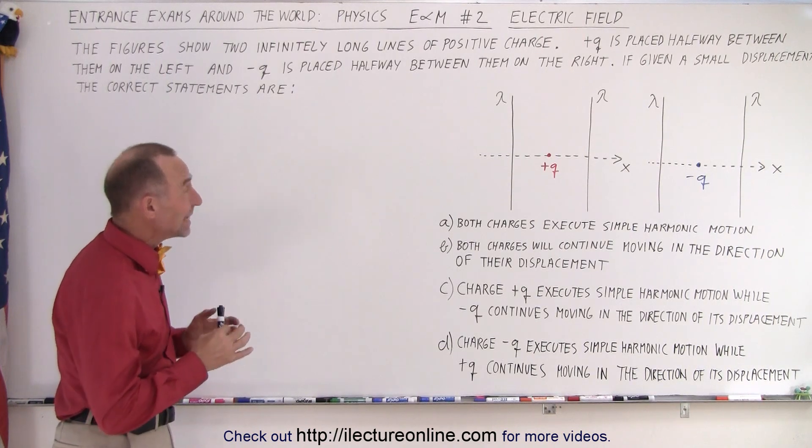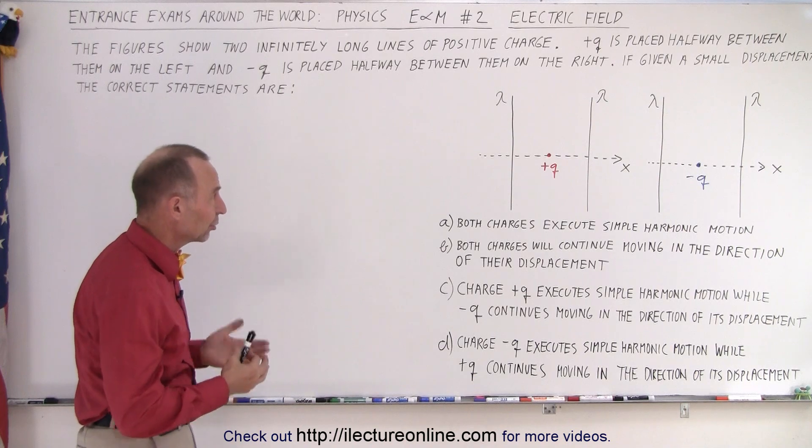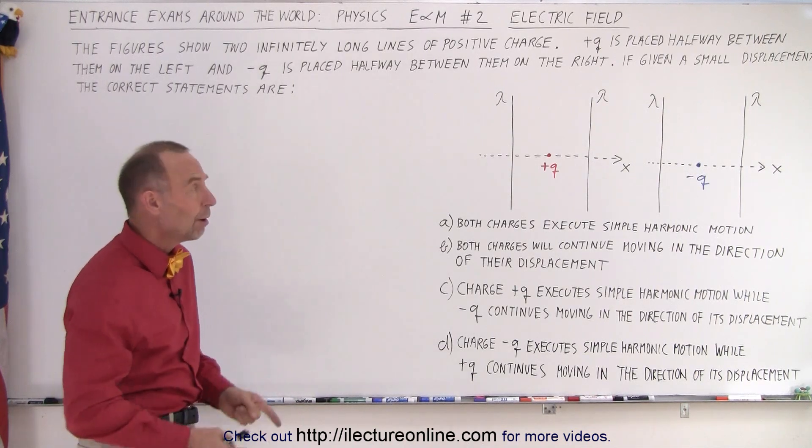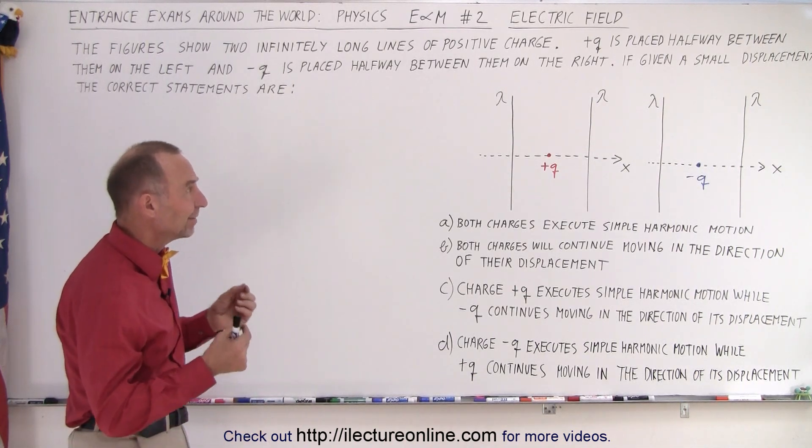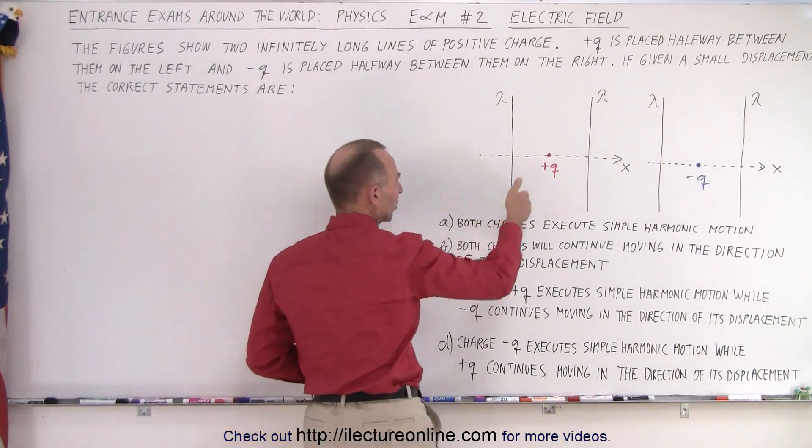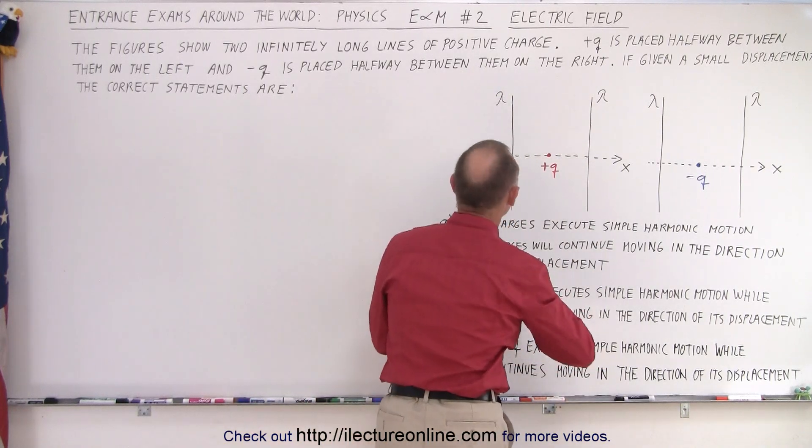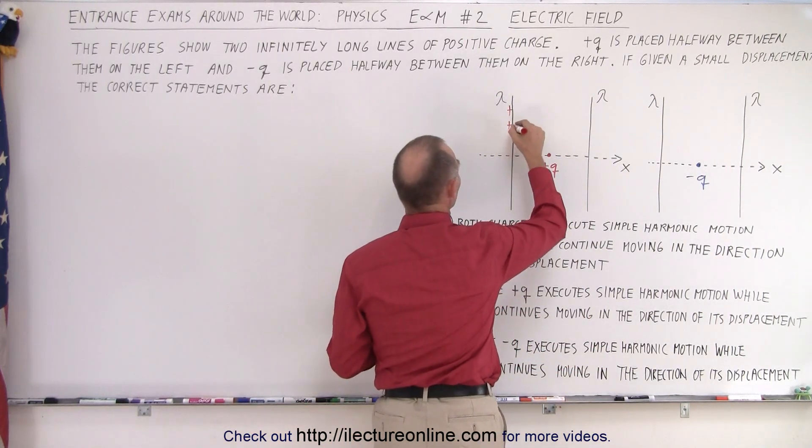Here we're dealing with E&M, electricity and magnetism, specifically with electric field created between two parallel lines that contain positive charge. So we have positive charge here and here, and sometimes it's not a bad idea to indicate that this is positive charge by just doing a few of these. We can do the same over here.